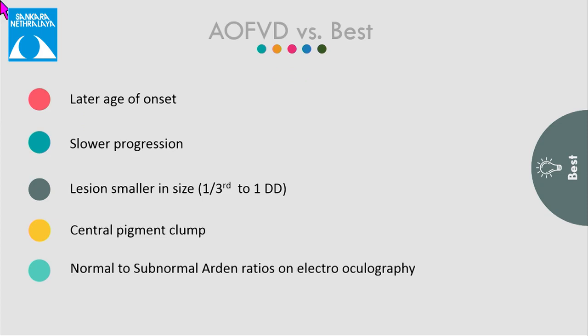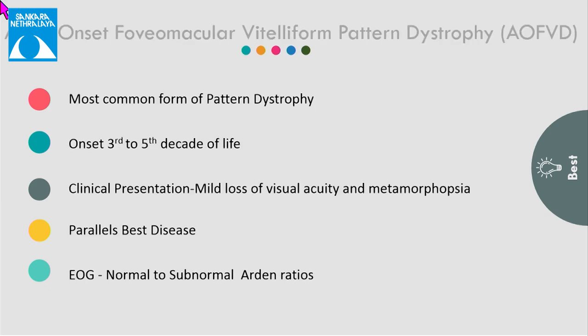The closest disease confused with Best disease is adult-onset foveal vitelliform dystrophy. It is the most common type of pattern dystrophy. The differences are that it has a later age of onset, slower progression, and the lesions are generally small in size with central pigment clumps with a normal Arden's ratio. They generally present with mild visual impairment, and stages parallel those of Best disease with normal EOG findings.